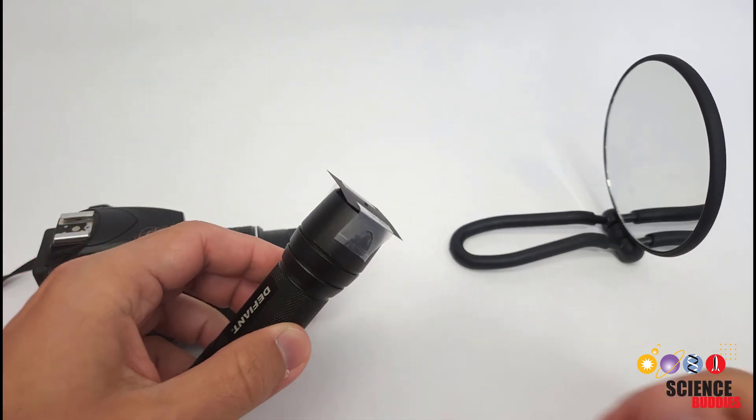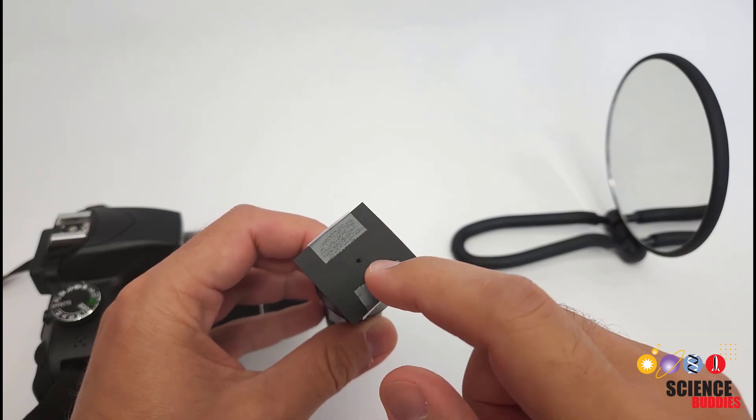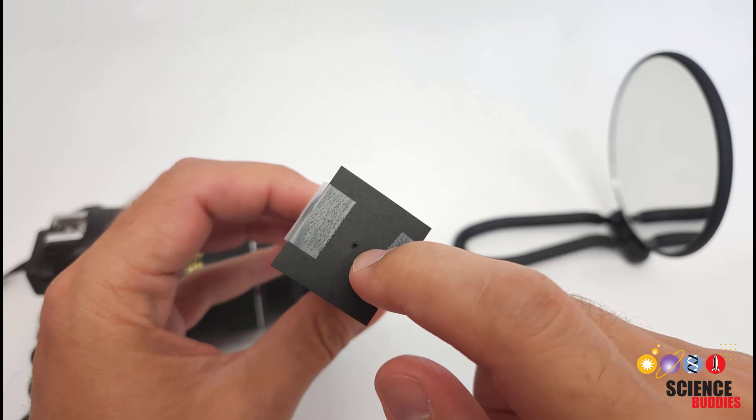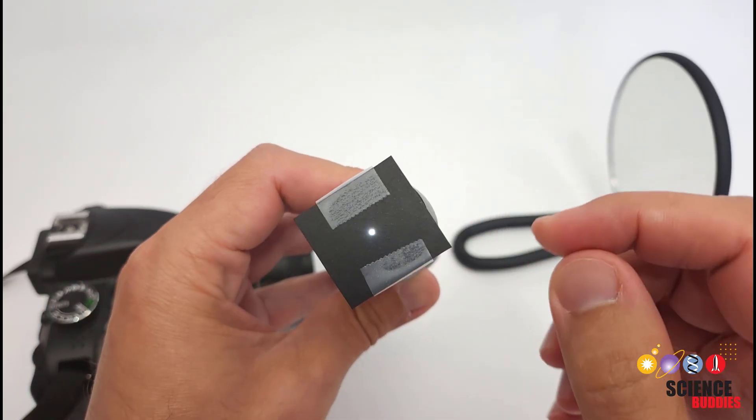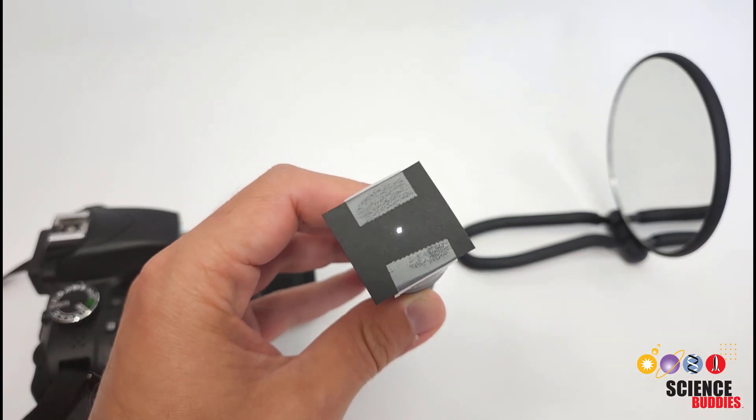You need a point light source, which is easy to make from a flashlight just by taping a piece of black cardstock or aluminum foil over the front of it and poking a tiny little pinprick hole in the cardstock or aluminum foil, and then when you turn it on, you just get a tiny little point of light that comes out.